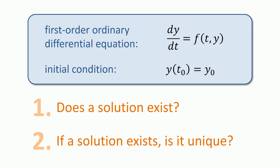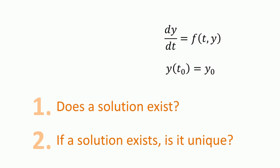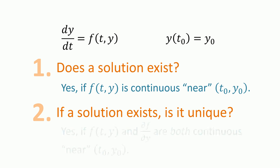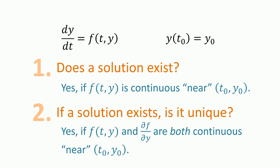Fortunately, we have a theorem that gives simple conditions under which this initial value problem has a unique solution. Informally, the theorem says that if f is a continuous function near the point, then a solution exists. Additionally, if the partial derivative of f with respect to y is also continuous near the point, then the solution is unique.